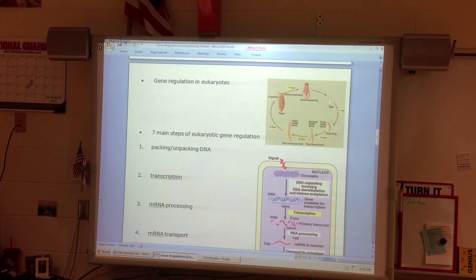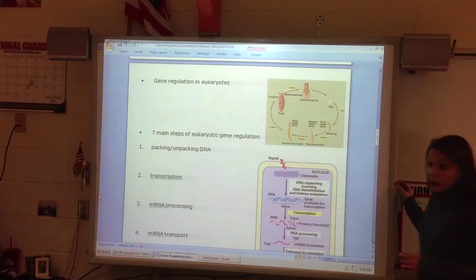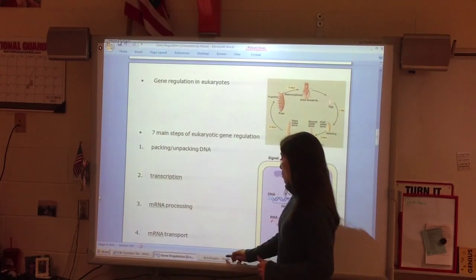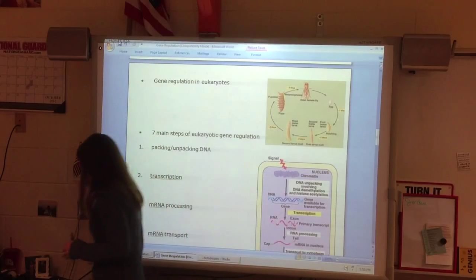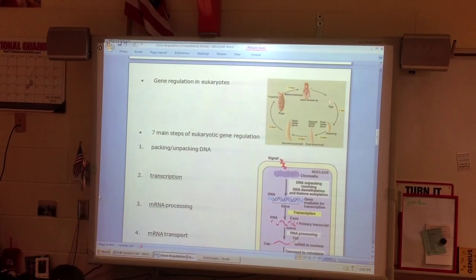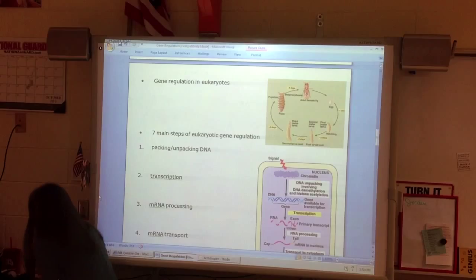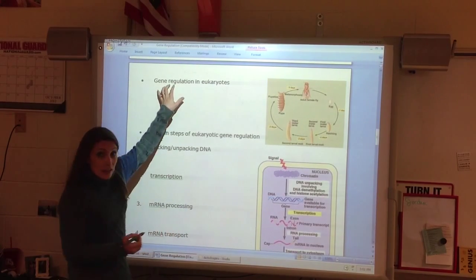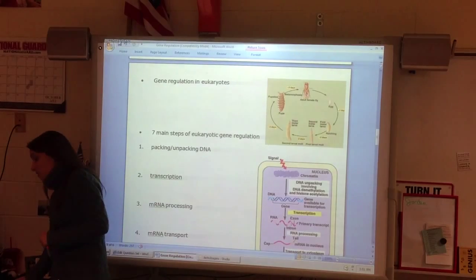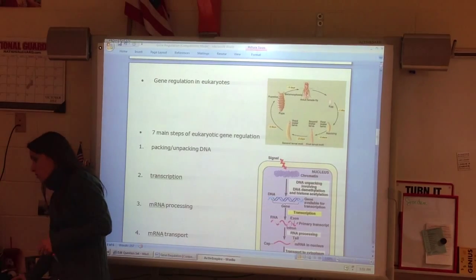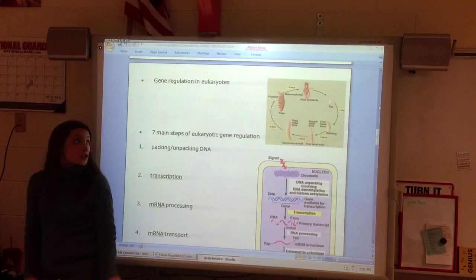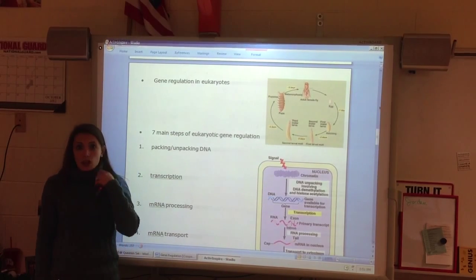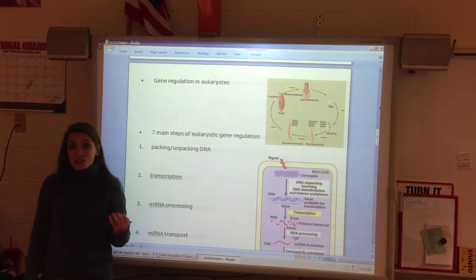So now we're looking at gene regulation in eukaryotic organisms. One of the main things to hold on to is that eukaryotic organisms are a lot more complex than prokaryotic organisms. And it turns out that it's believed that gene regulation is the reason that eukaryotic organisms are able to be much more complex. So we do want to note that gene regulation allows for differentiation.